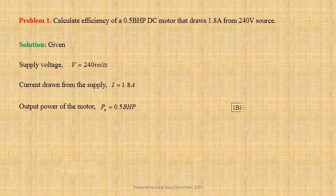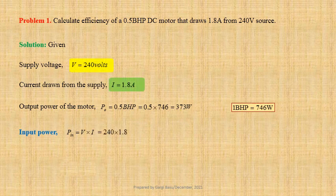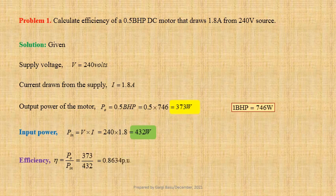Since 1 BHP equals 746 watts, P_o equals 0.5 into 746, that is equal to 373 watts. Let us first calculate input power: P_in equals V into I. Using values we get 240 into 1.8, that is equal to 432 watts. Efficiency of the motor: eta equals P_o divided by P_in. Using values we get 373 divided by 432, that is equal to 0.8634 per unit or 86.34 percent.